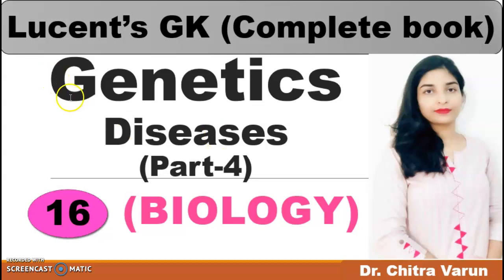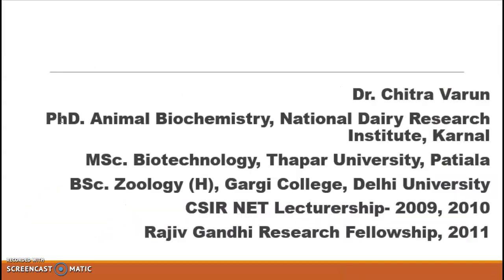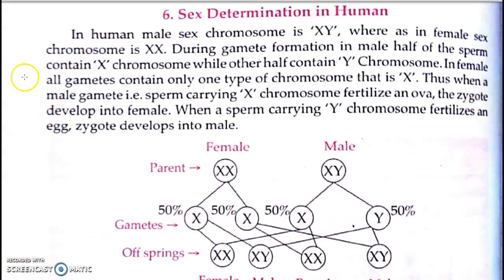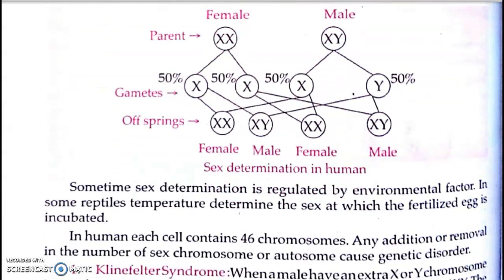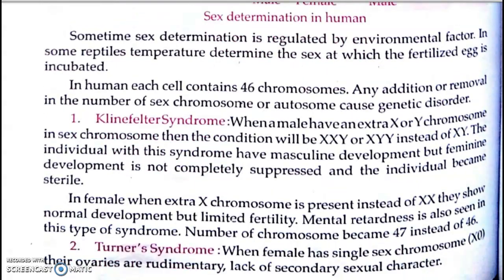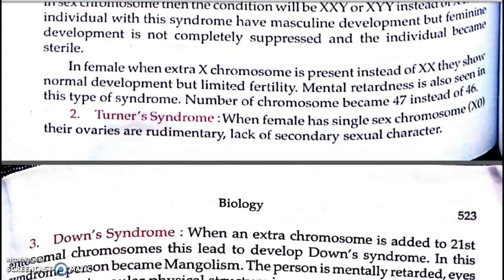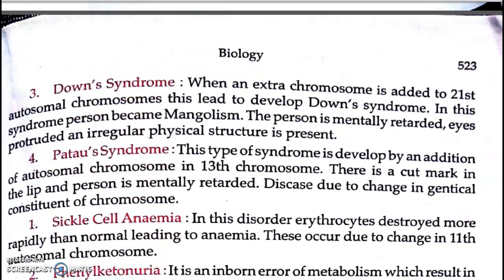Good morning everyone. Here we are discussing USE and GK's biology syllabus, and today's topic of discussion is genetic diseases. This is Part 4. In our previous lecture, we discussed sex determination in human beings, and we discussed some genetic disorders like Klinefelter syndrome, Turner syndrome, Down syndrome, and Patau syndrome.